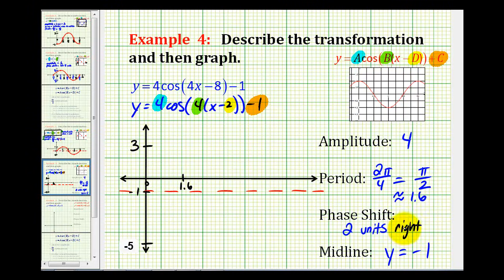But because we have a phase shift of 2 units right, instead of starting at 0 and stopping at 1.6, we're actually going to start at 2 units, and then because the period is approximately 1.6, we'll have one complete period from 2 to approximately 3.6. Again, the period was pi over 2, which is approximately 1.6, and our phase shift was 2 units to the right.